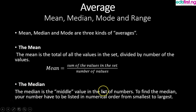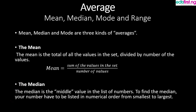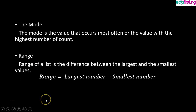The median is the middle value in a list of numbers. To find the median, you first have to arrange the numbers in numerical order from the smallest to the largest, or from the largest to the smallest. The mode is the value that occurs most often, or the value with the highest count in a set of numbers. The range is the subtraction of the lowest number from the highest number in a set.